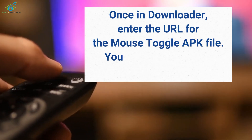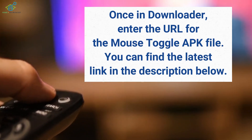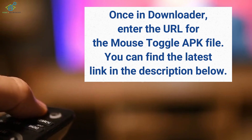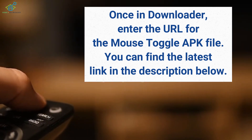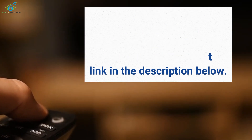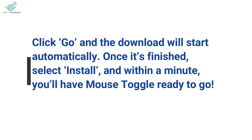Once in Downloader, enter the URL for the mouse toggle APK file. You can find the latest link in the description below. Click Go, and the download will start automatically. Once it's finished, select Install, and within a minute you'll have mouse toggle ready to go.